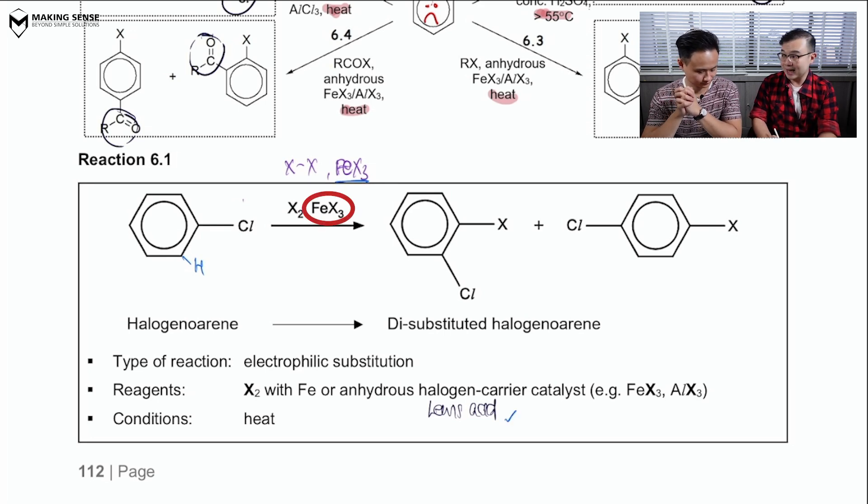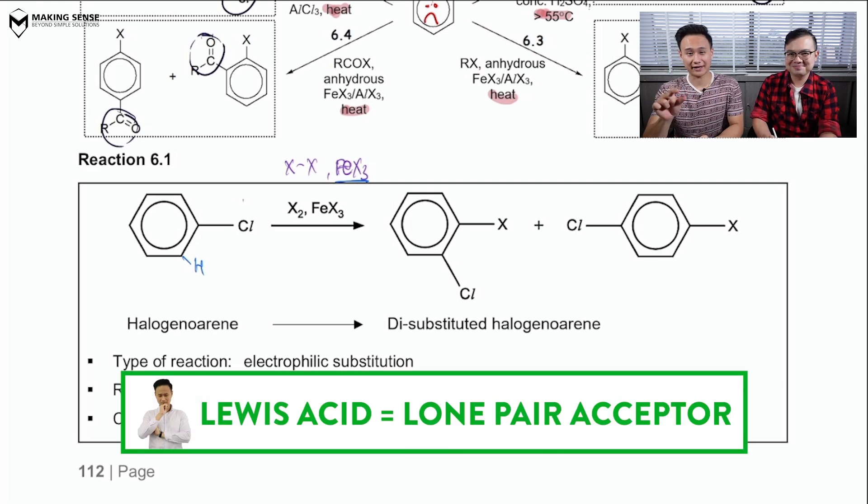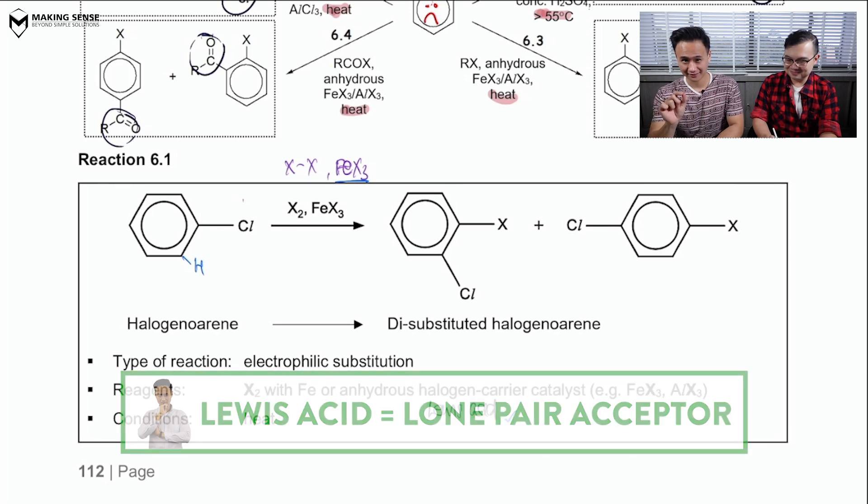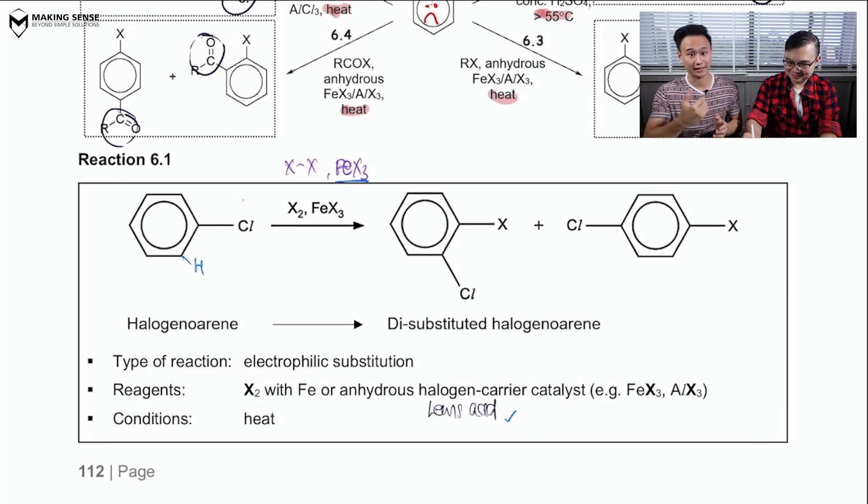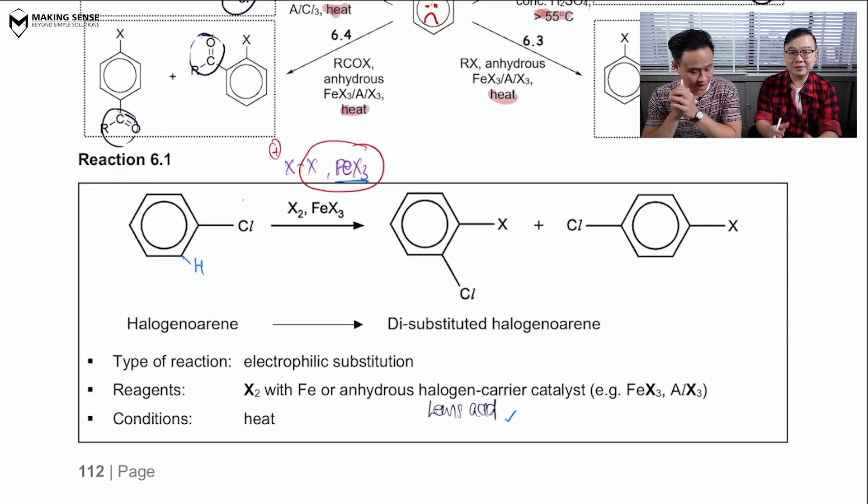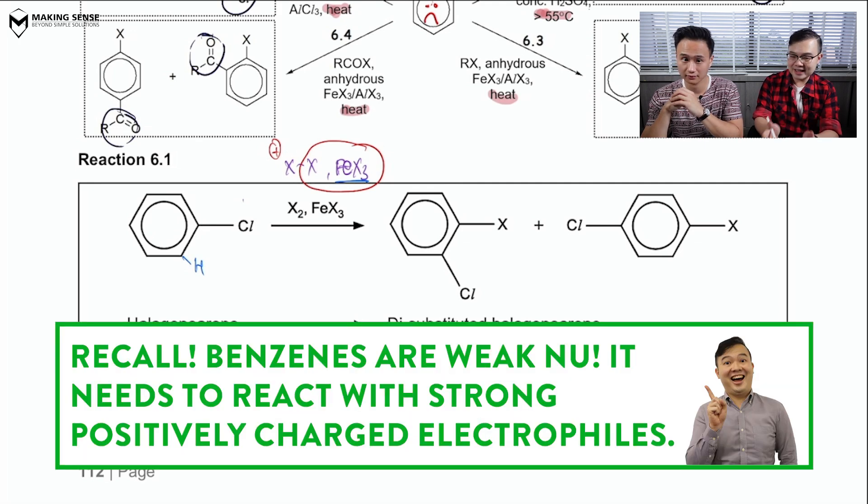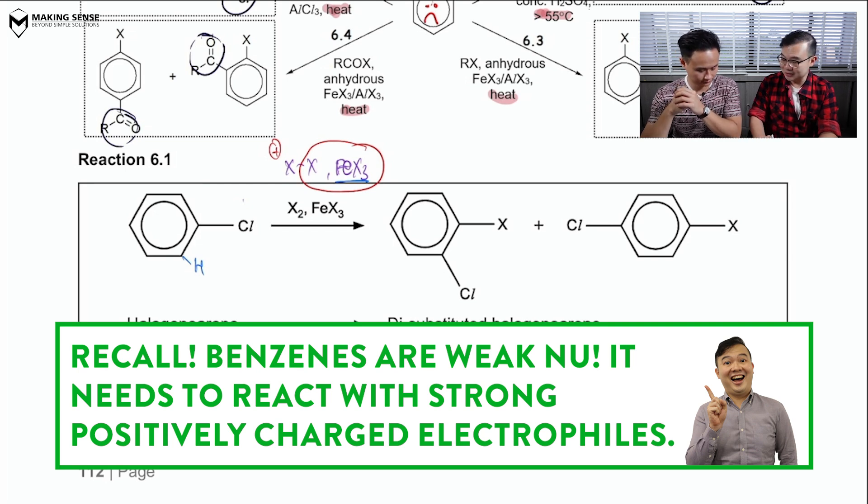Now, the reason why is it electrophilic is because your benzene is a nucleophile. But, in general, we actually need to employ the help of a FeX3, which we call a Lewis Acid, to help me to do something. Mr. Tim, can you remind me again, what's the purpose? Lewis Acid, the LA stands for lone pair acceptor. So, it's going to accept a lone pair from the halogen. It breaks that XX bond and releases that X+.